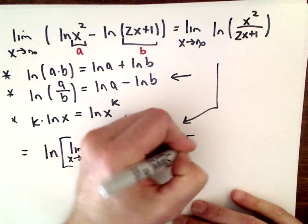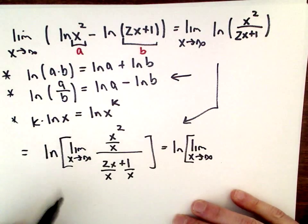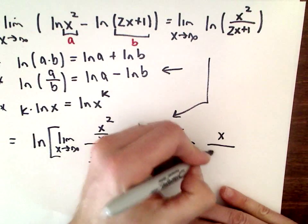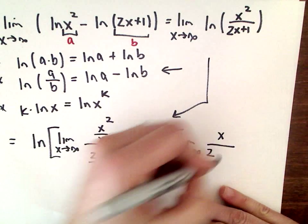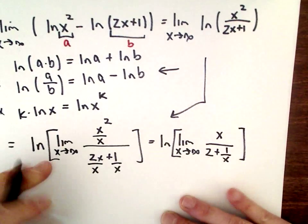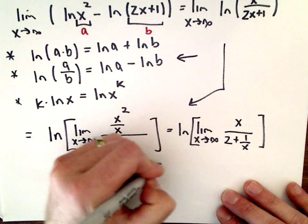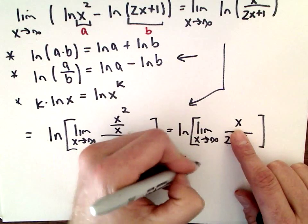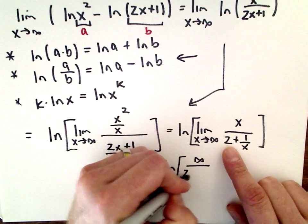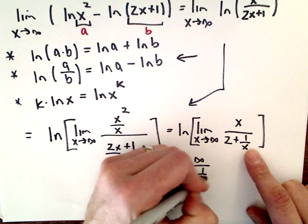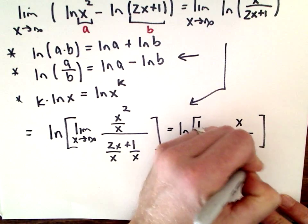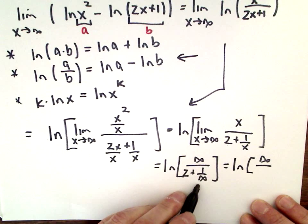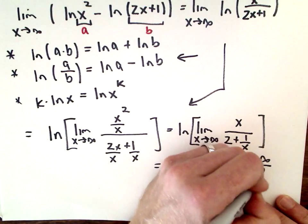So we've got the natural logarithm of the limit as x goes to infinity. x squared over x just leaves me with x in the numerator. 2x over x is 2, plus 1 over x. As x goes to infinity, x is going to infinity in the numerator, and 1 over infinity is 0, so the denominator becomes 2 plus 0, which is 2.